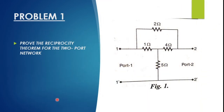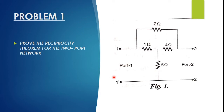Now let us understand the reciprocity theorem using two basic problems. In the first problem, the given statement is: prove the reciprocity theorem for the two-port network. A DC network is given — I call this DC because we have only resistive components with no inductors or capacitors. We have two ports: port 1 and port 2. First, connect a source to port 1 and check the output at port 2. Next, connect the source at port 2 and measure the output at port 1. If both ratios remain the same, the reciprocity theorem is verified.